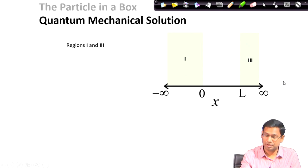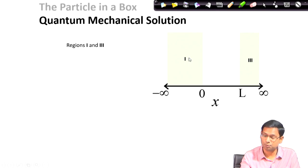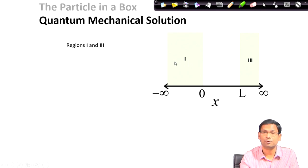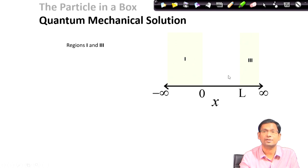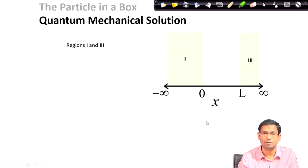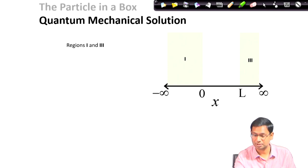We have now defined three regions: region 1 and region 3, which experience V equals infinite, and region 2 where V equals 0. We will solve the quantum mechanical problem in each of these regions, beginning with regions 1 and 3.